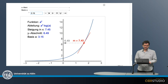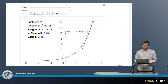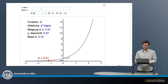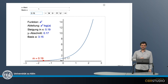Here, a is the basis of this function and I can change a with this slider. I'll set a to, for example, 3.15, and now only change the x value. When I look at the slope and the y value — the slope is the derivative of the function, the y value is the function itself — the derivative is always higher than the y value, no matter what x value I choose.